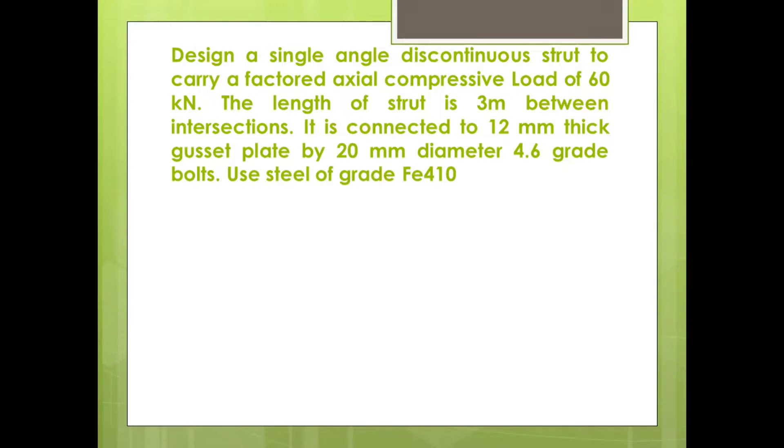This is our first problem. Design a single angle discontinuous strut to carry a factored axial compressive load of 60 kilonewtons. The length of strut is 3 meters between intersections. It is connected to 12 mm thick gusset plate by 20 mm diameter 4.6 grade bolts. Use steel of grade Fe410.